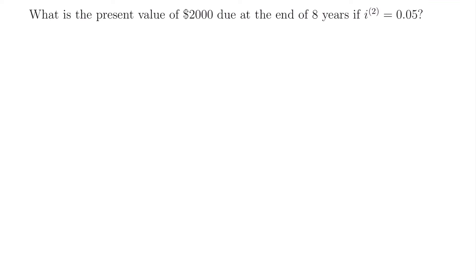Welcome back. We're going to start with this example: what is the present value of $2,000 due at the end of eight years if our nominal annual interest rate, where the number of periods is 2, is equal to 0.05? So how do we deal with this nominal annual interest rate?